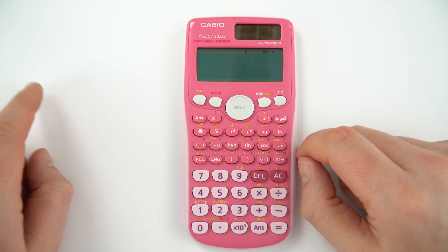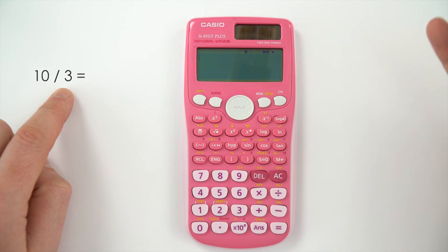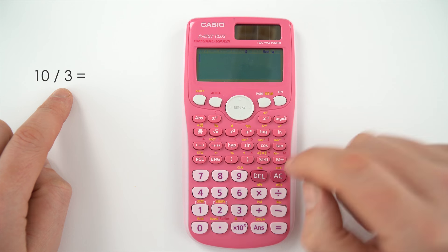Now let's suppose we had a really simple sum, 10 divided by 3. I know you know the answer is 3 and a third, you can do it in your head.